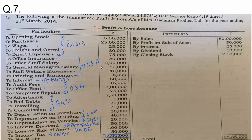Coming to the credit side: sales is our very first item. Profit on sale of asset is next. For sales — since no returns are given — we can write it directly as net sales.